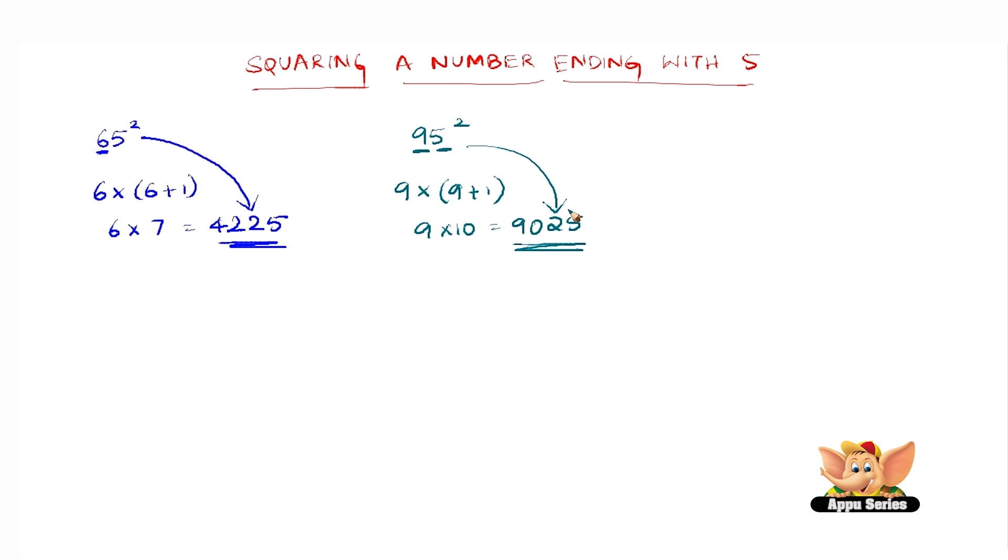This is one of the very simplest methods to find the square of 95 or any numbers ending with 5.